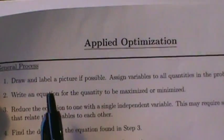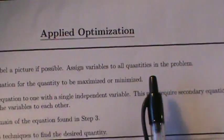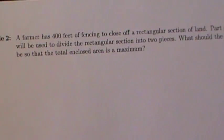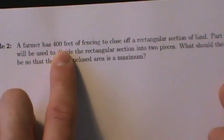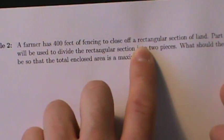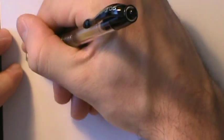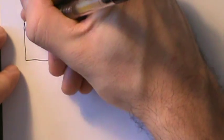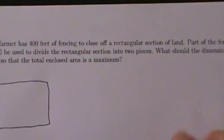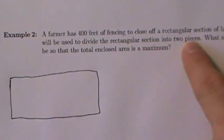Step one: draw and label a picture if possible, and assign variables to all the quantities in the problem. This time it is possible to draw a picture, because we're talking about a farmer with 400 feet of fencing closing off a rectangular section of land. So we draw this section of land and then draw a rectangle. Part of the fence will be used to divide the rectangular section into two pieces.